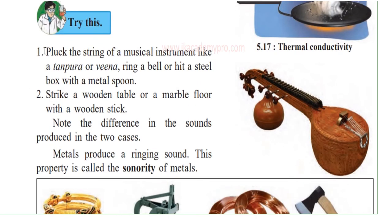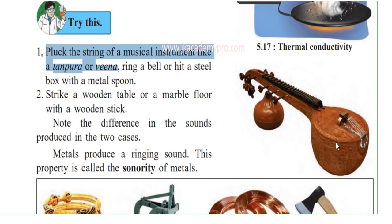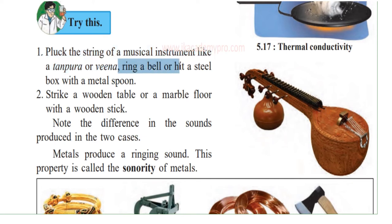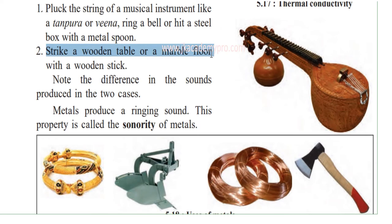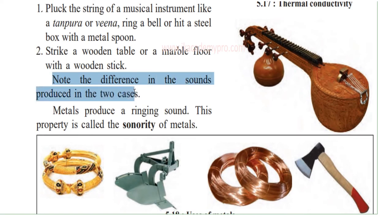Try this. Pluck the strings of a musical instrument like the Tanpura or Veena — plucking means lightly pulling the strings. Or ring a bell, or hit a steel box with a metal spoon. You must have done all these things. Now also strike a wooden table or a marble floor with a wooden stick. Note the difference in the sounds produced in the two cases.